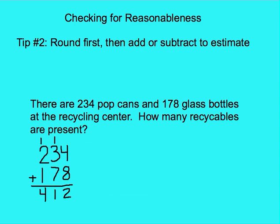Let's look at tip number two. After you know if you're adding or subtracting, you want to round first and get a reasonable ballpark for what your answer should be, and then take those rounded numbers and add or subtract them to estimate the correct answer. Let's see this in action.